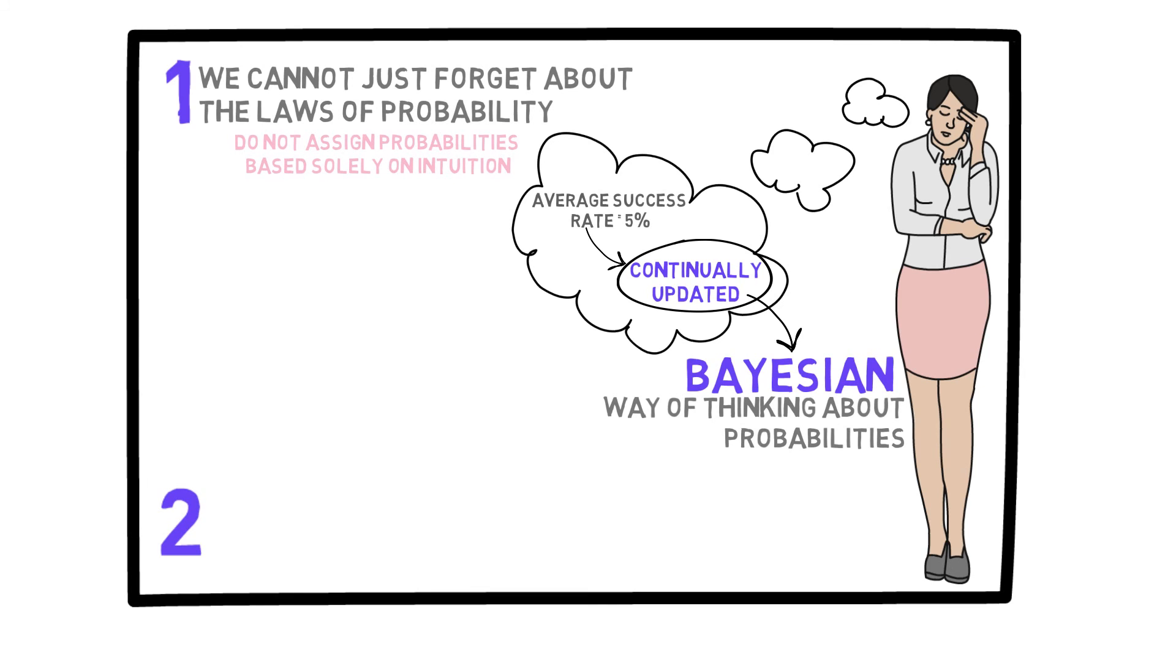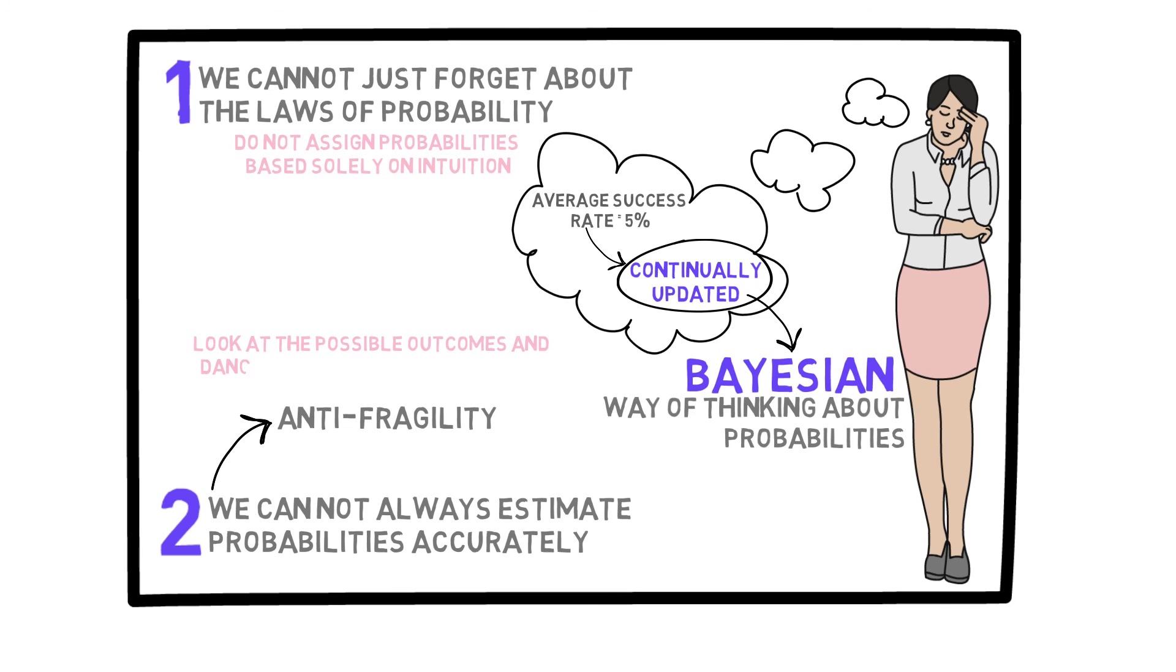The second important point is that in many important scenarios in life, we cannot estimate probabilities accurately. In other words, you could have some opinion, but there could be a lot of uncertainty involved. In those kinds of scenarios, again there are still strategies you could use to produce a positive result, such as the concept of antifragility, which is a very interesting concept introduced by Nassim Talib. We will not discuss this in depth until later, but for a quick explanation, in those scenarios, we would look at the possible outcomes and potential dangers as well as the strategies and plans that might help us even in scenarios where we cannot assign probabilities accurately.